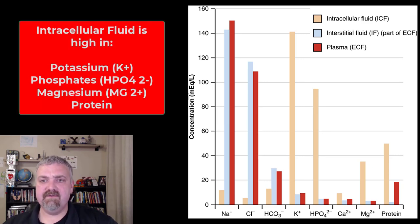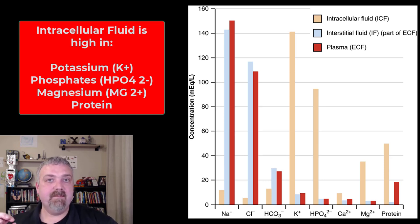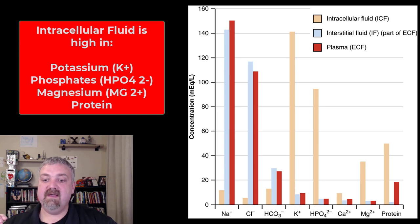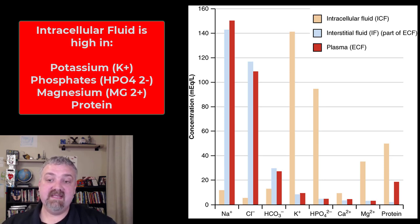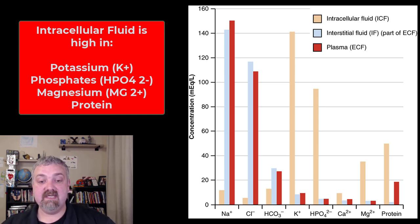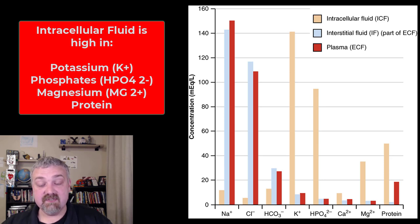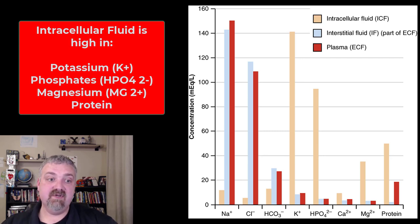Then we have intracellular fluid. You can see that potassium is going to be really high, along with phosphates, magnesium, and proteins. Those are going to be the key things inside your cells. The main takeaway is: sodium is outside your cells, potassium is inside your cells. And protein is inside your cells and inside your plasma, but not in your interstitial fluid.